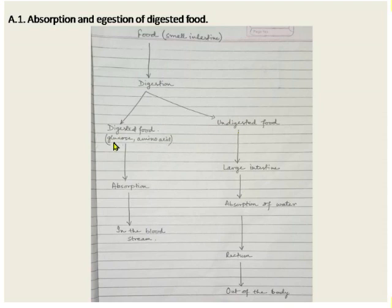Digested food — like glucose, amino acids, fatty acids — is absorbed in the small intestine through villi and goes into the bloodstream. This digested food is dissolved in the blood.